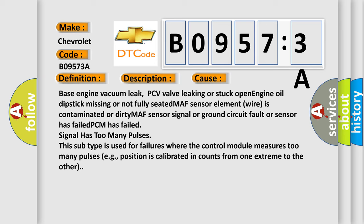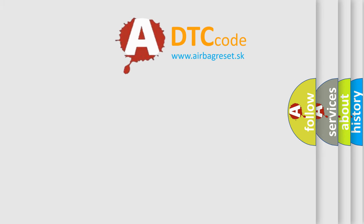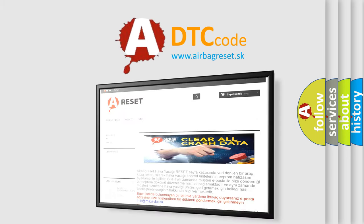This subtype is used for failures where the control module measures too many pulses, e.g., position is calibrated in counts from one extreme to the other. The airbag reset website aims to provide information in 52 languages. See you soon. Thank you.